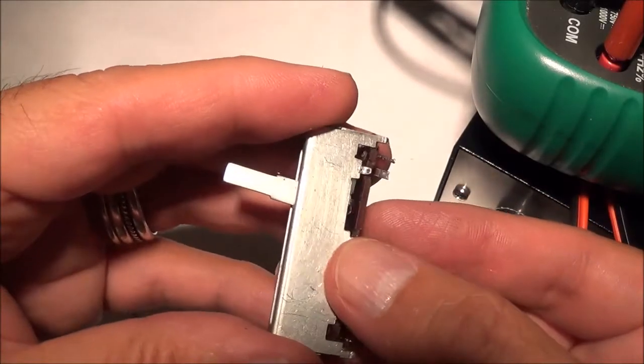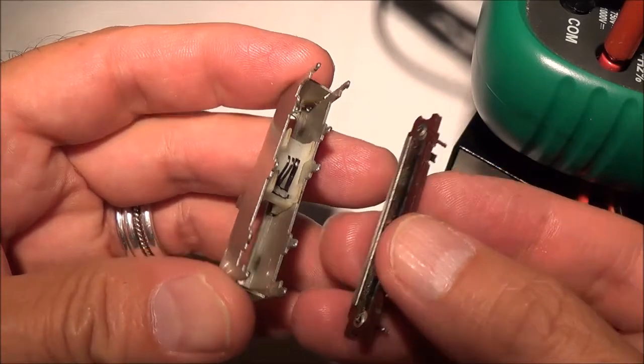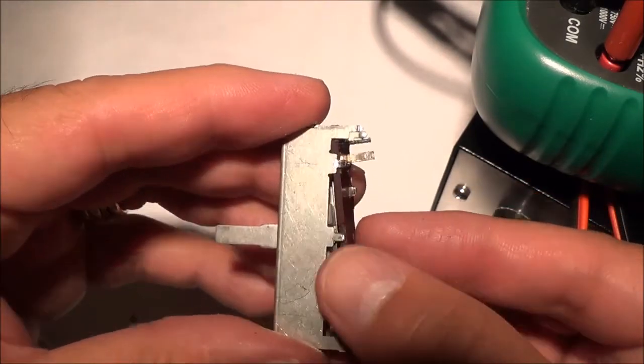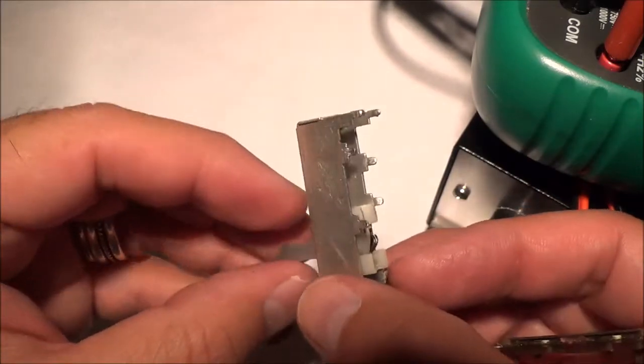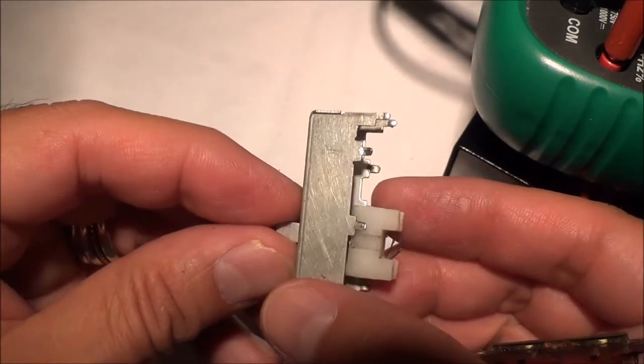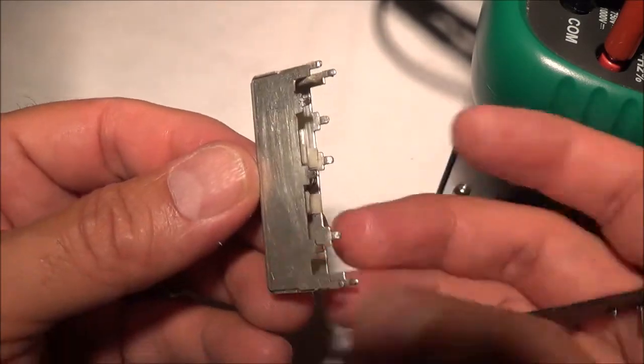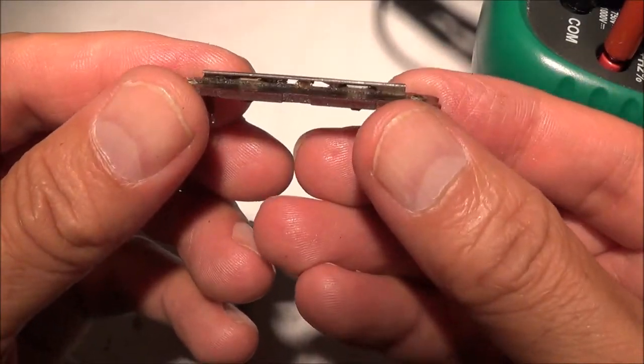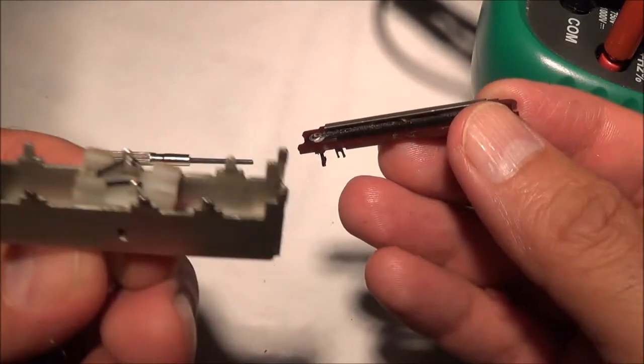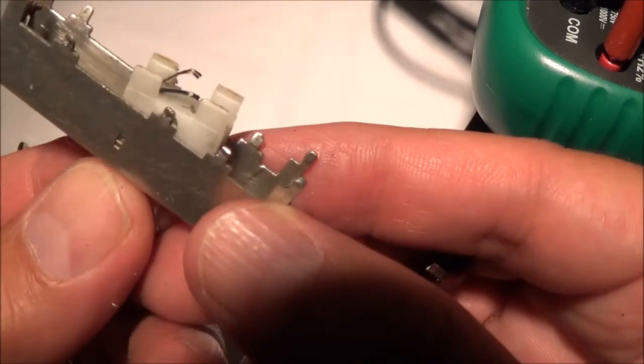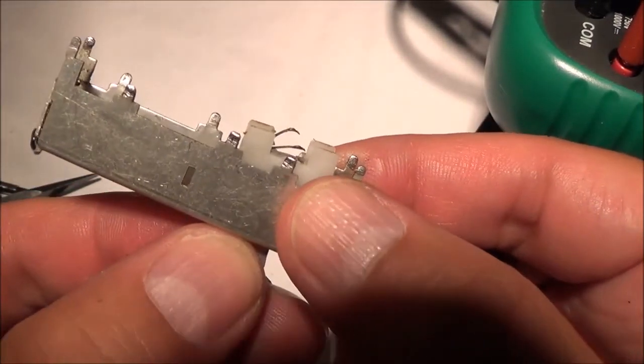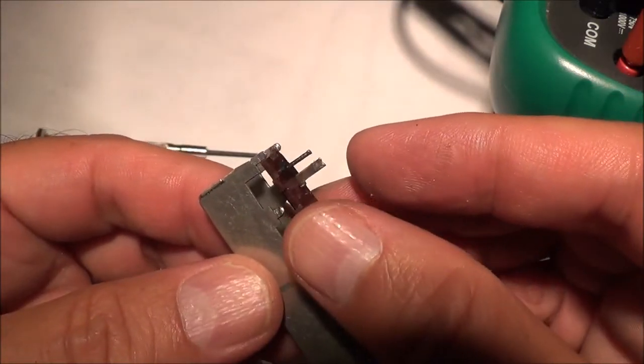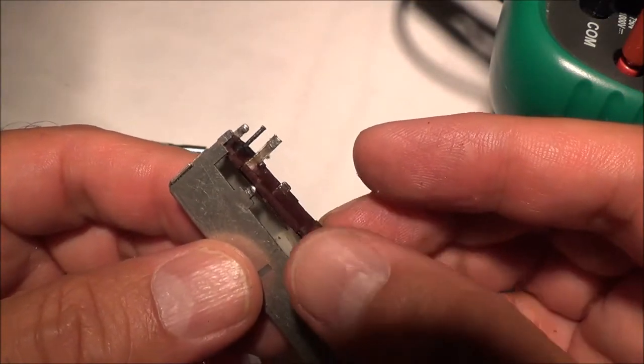So I got it back together. These things, by the way, only come apart and go together one way, so you really can't make a mistake. The metal track and the carbon track here have two different heights, and also the contacts have two different heights too, so it only goes in one way. The whole thing only fits into the body one way too.